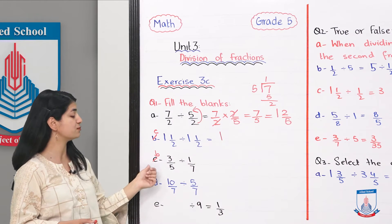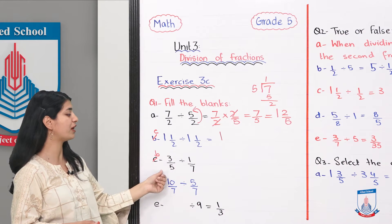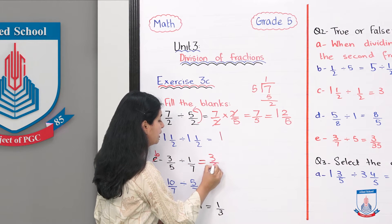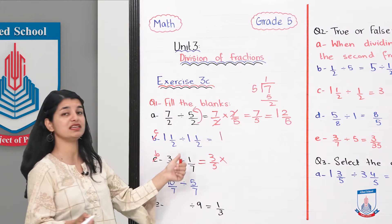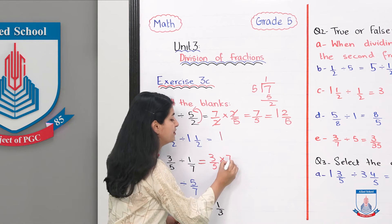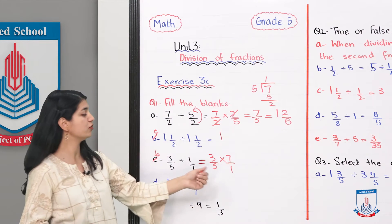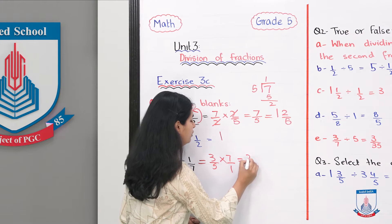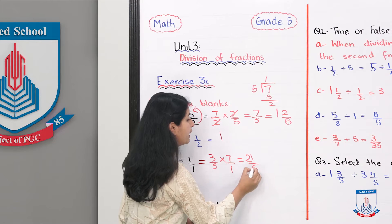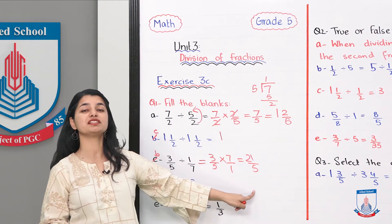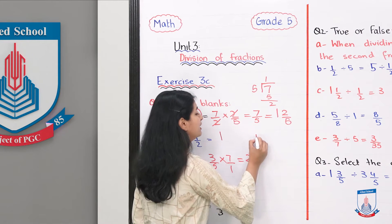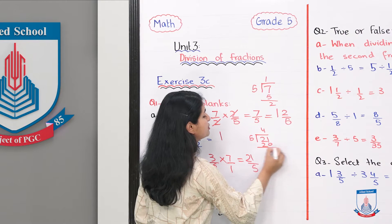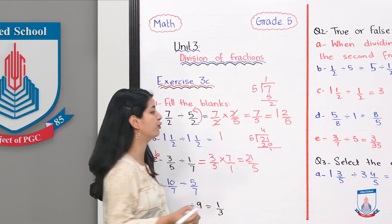Now if we look at your textbook part B, that is 3 over 5 divided by 1 over 7. It is very easy: 3 by 5, we have to multiply by the inverse, 7 over 1. When we multiply 3 into 7 is 21 over 5.